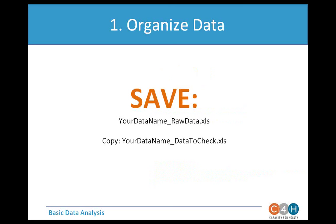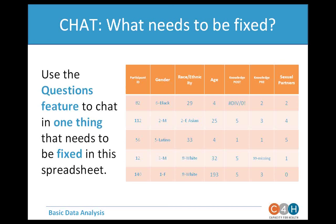Now that data is organized, save it somewhere safe — backed up — both to the past and future. Save one file as raw data (e.g., 'HIV_survey_raw_data') that you set aside and never edit again, so you can always trace back to it. Save another file moving forward (e.g., 'HIV_survey_data_to_check') as you move into the next step. Over time you'll create a series of files cataloging each step of the data analysis process.